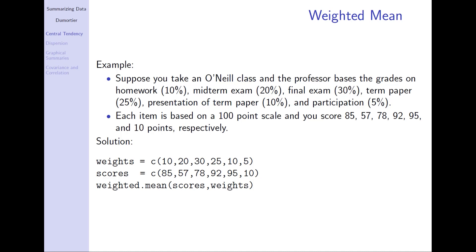It is probably easiest to look at the concept of weighted mean with an example. Suppose you are taking an O'Neill class and the professor bases the grades on homework, midterm exam, final exam, term paper, presentation of term paper, and participation. The homework is worth 10%, the midterm exam 20%, the final exam 30%, the term paper 25%, and the presentation and participation 15%.